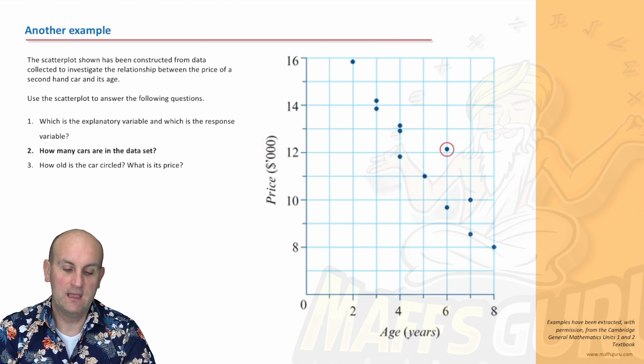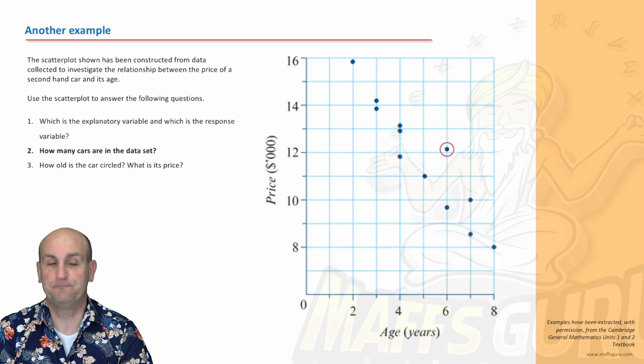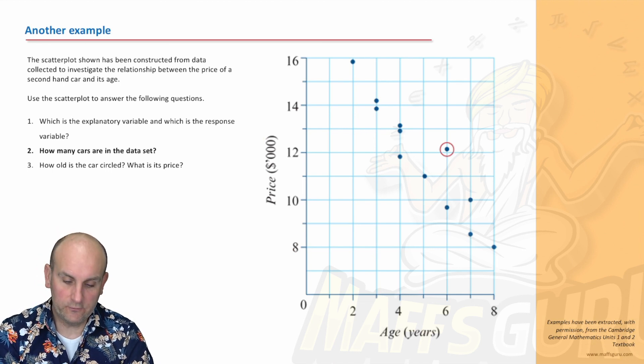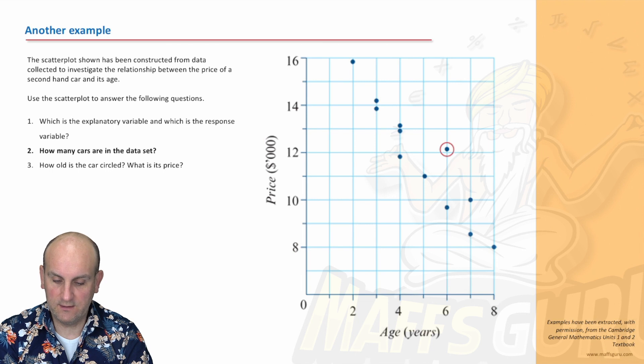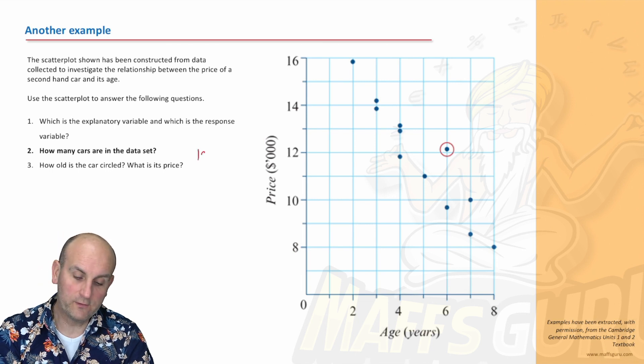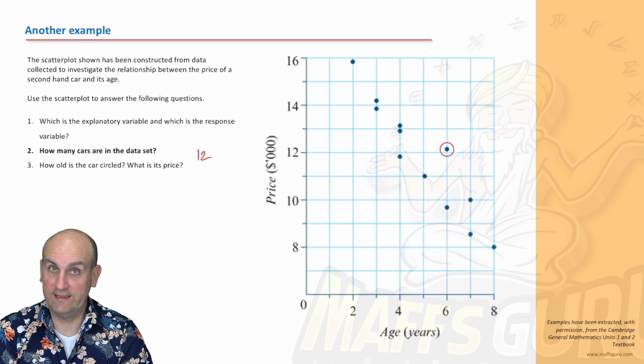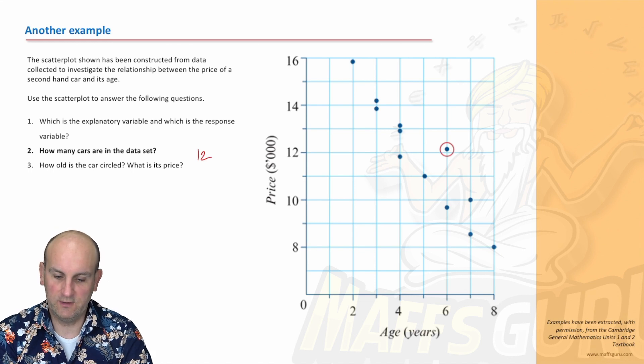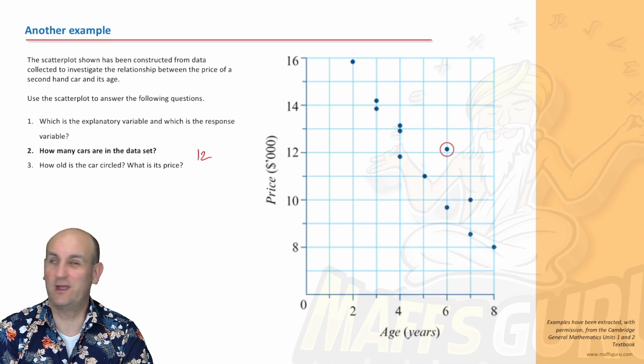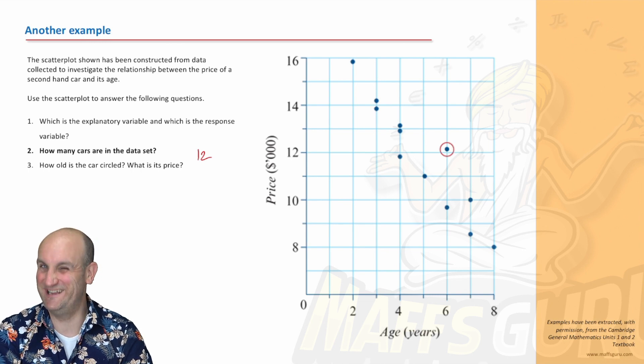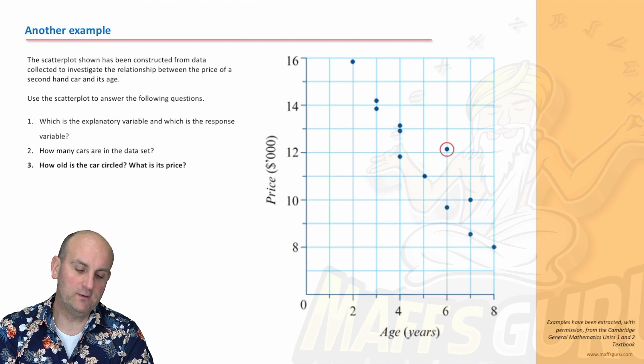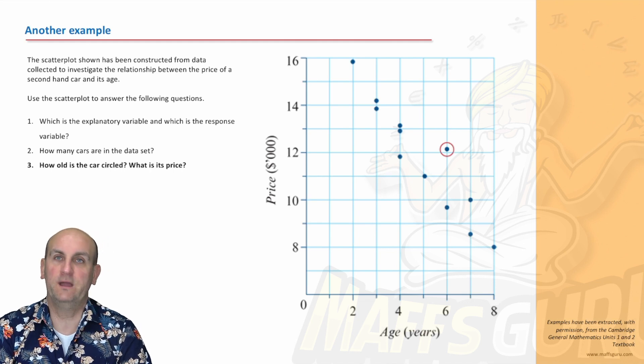So what is the explanatory and which is the response? We've done that. Let's move to the next part. How many cars are in the data set? If you look at it, how do we know how many cars there are? Count the dots. There are 12 cars in the data set. I'll just do that again because that'd be awkward if I miscounted. And yes, 12. You're all looking at this going, it's not that difficult. I know. I put it down to the teaching personally.